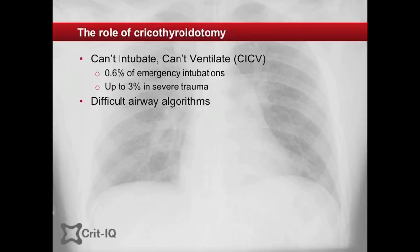Difficult airway algorithms have been developed for this circumstance and frequently these end with emergency cricothyroidotomy. Though many variations on these procedures exist, in this video we will review three more commonly described methods.